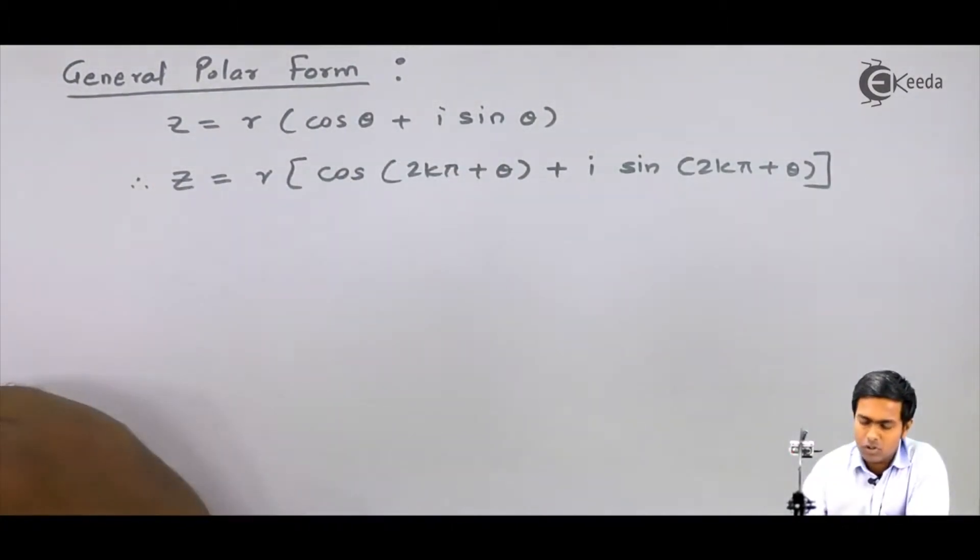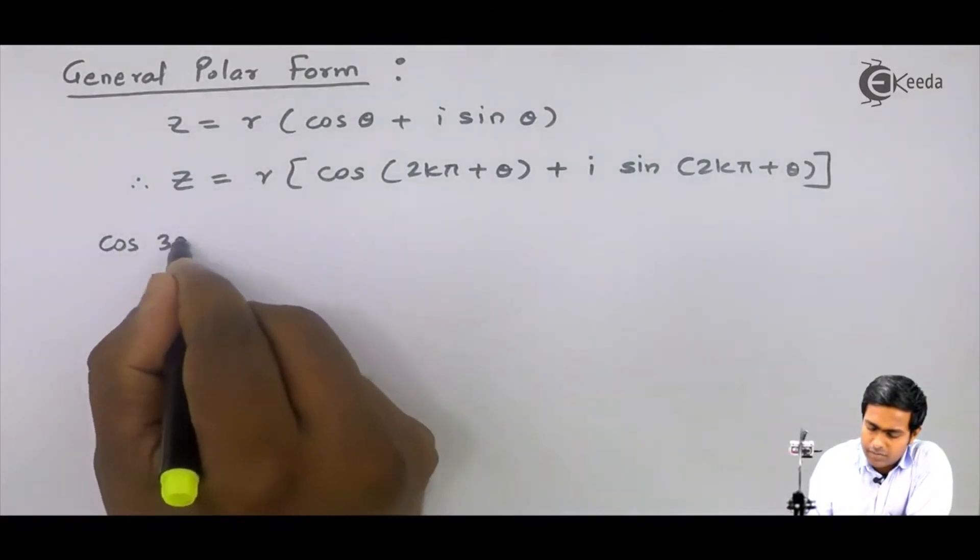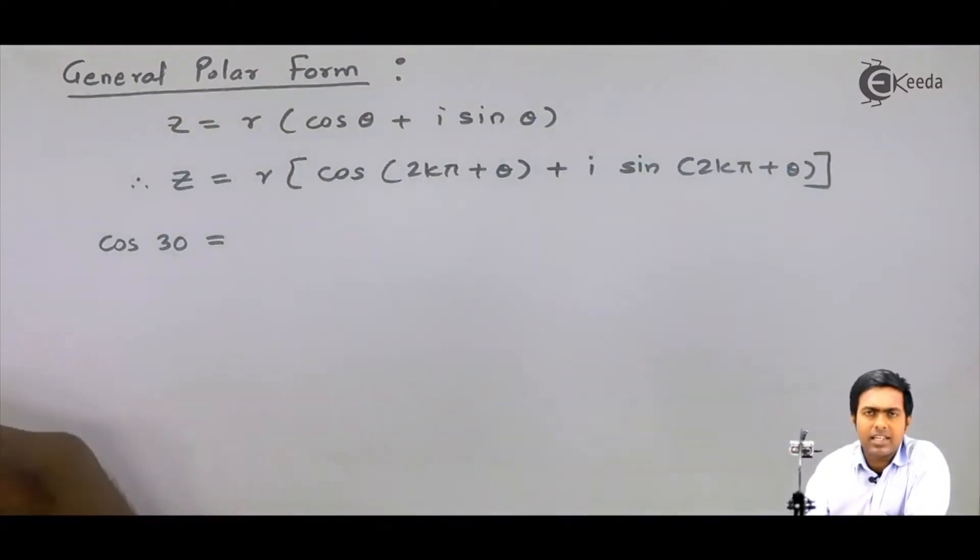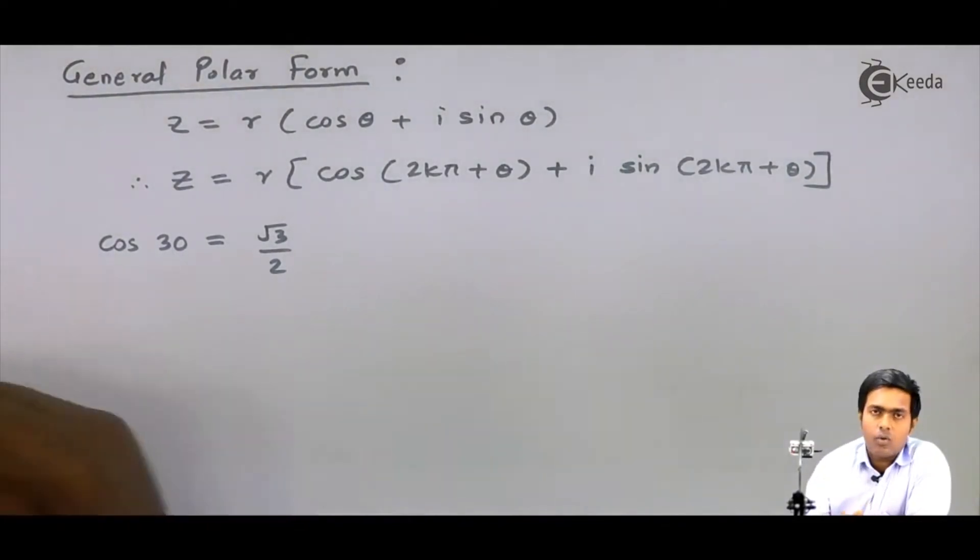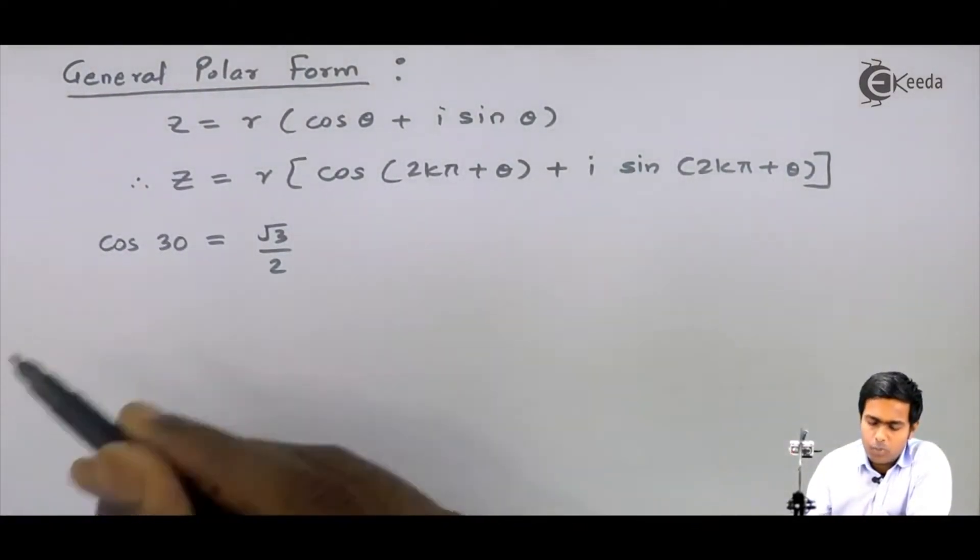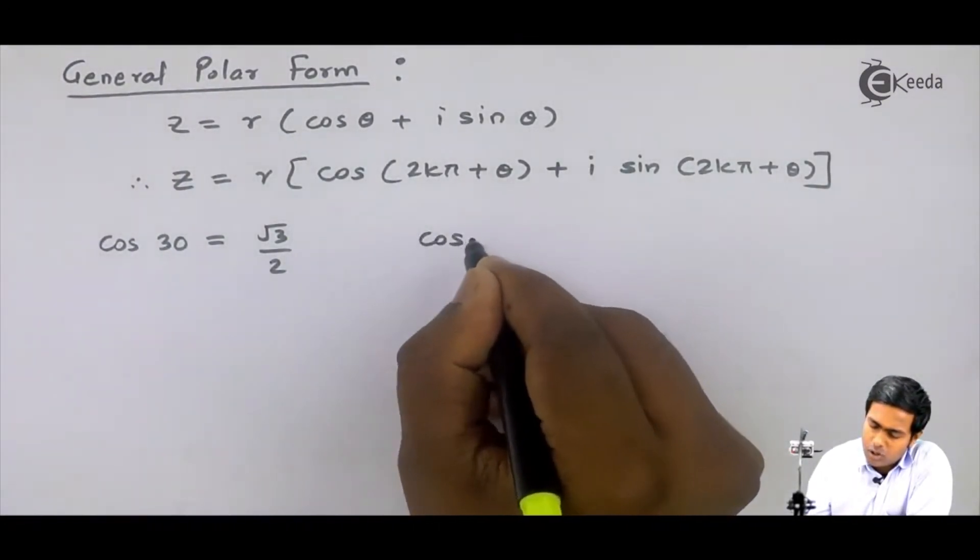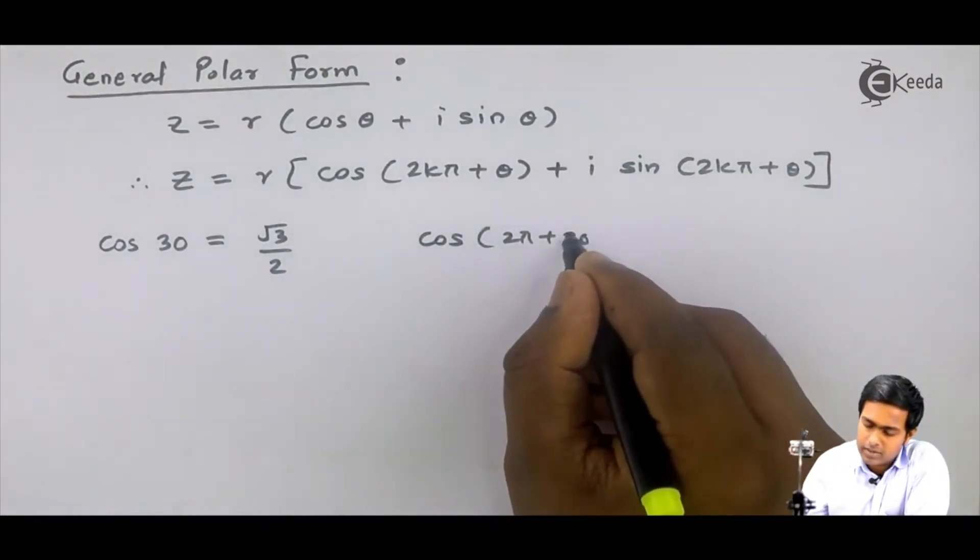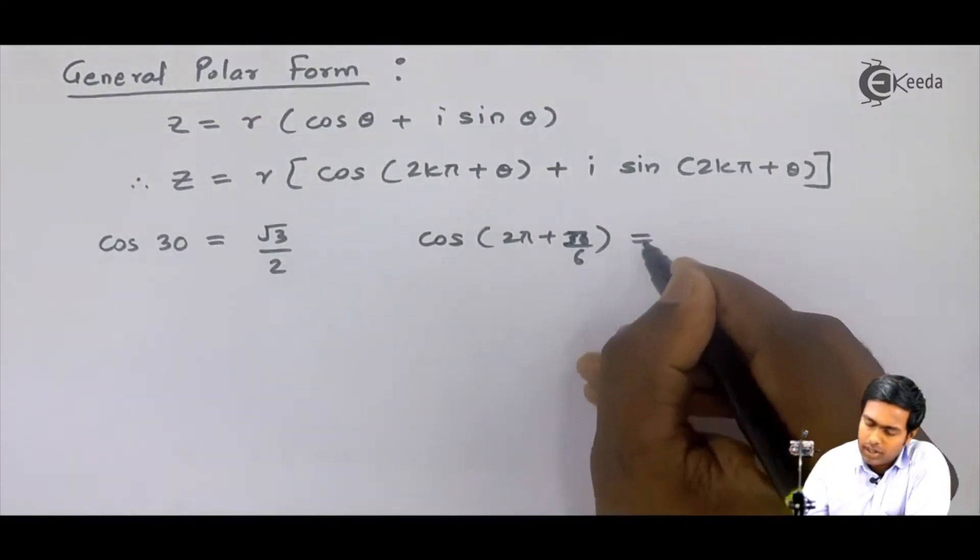Now let's take one example. If I want to find cos of 30°, you all have calculators as well as you know the table, so you can easily tell me that cos of 30° is √3/2, right? Now let's see what happens if I will add 2π in this 30°. So I will get cos of 2π plus 30°. 30° is nothing but π/6, so I will write π/6.